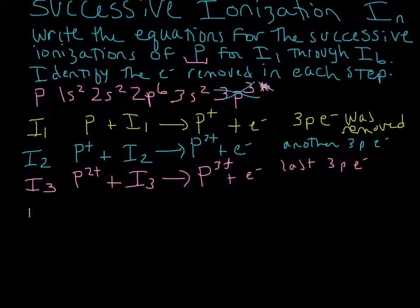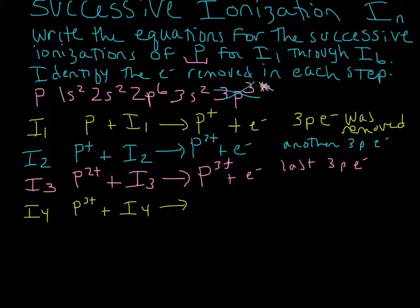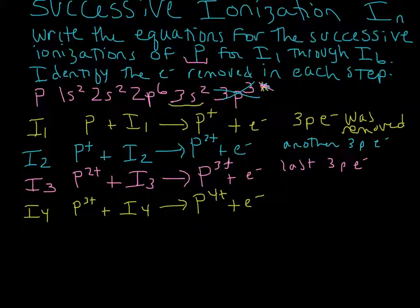Now let's write out I4. We start with P3+, put in I4 — which is going to be higher than I3 because it gets harder and harder to remove an electron — and we end up with phosphorus 4+ and an electron. The electron we removed this time is a 3s electron.